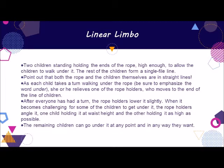After everyone has had a turn, the rope holders lower it slightly. When it becomes challenging for some of the children to get under it, the rope holders angle it — one child holding it at waist height and the other holding it as high as possible. The remaining children can go under it at any point and in any way they want.